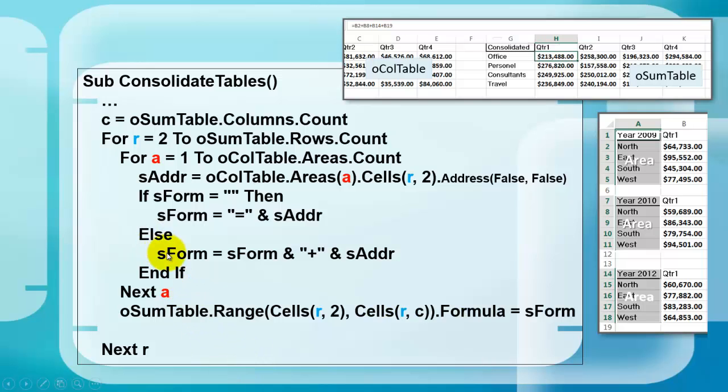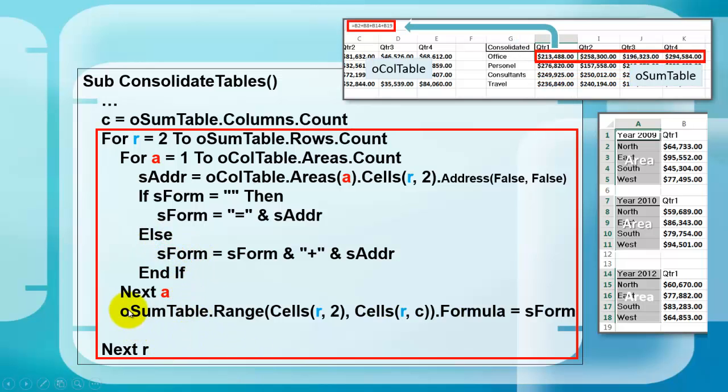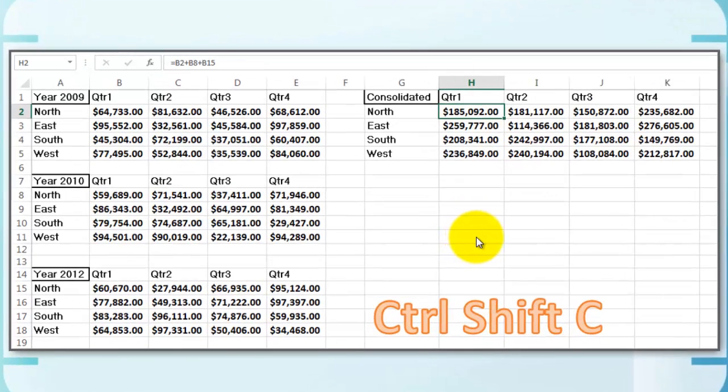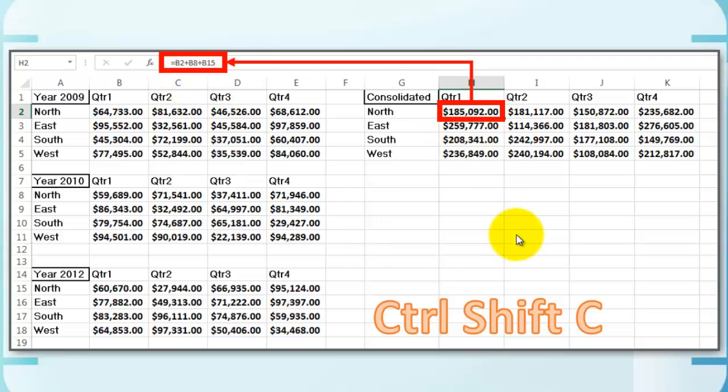We store that formula, S form, in the O sum table, range cells R2, let's say this one, through RC. Store S form in there because it is a relative notation. It will adjust to its location. And empty the string S form. And do the loop again. And do the loop again. And do it for the third row, for the fourth row, for the fifth row. So we end up with something like this. And that cell is now equals B2 plus B8 plus B15.